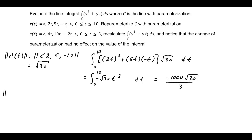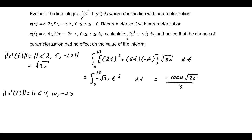Let's do a similar process. We'll find the magnitude of s prime of t, which is the magnitude of the vector 4, 10, negative 2, which is equal to 2 square roots of 30.